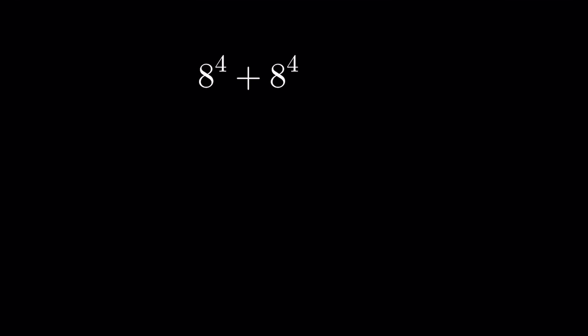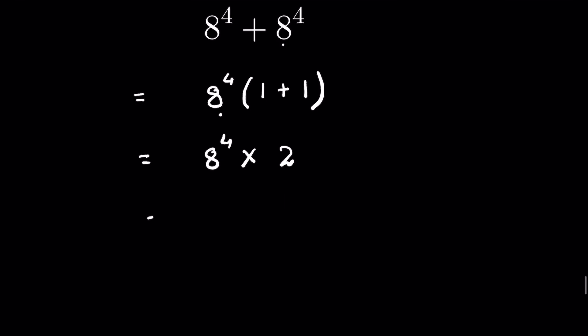8 to the power 4 plus 8 to the power 4 — how to solve this. Let's first simplify: 8 to the power 4 is common, so we can write it as 8 to the power 4 times bracket 1 plus 1 bracket, since 8 to the power 4 divided by 8 to the power 4 is 1. So 8 to the power 4 multiplied by 1 plus 1 is 2.